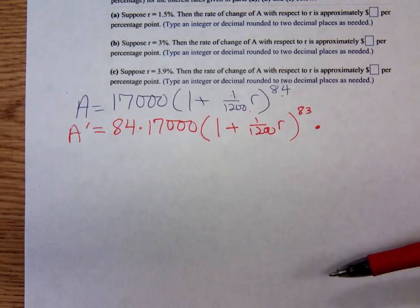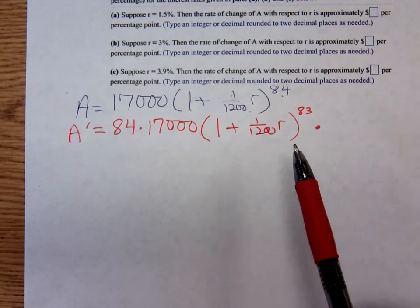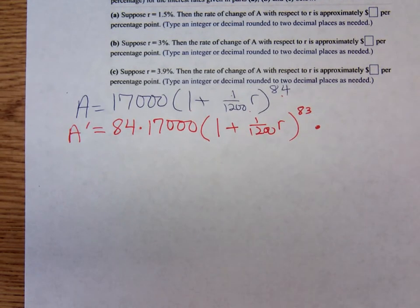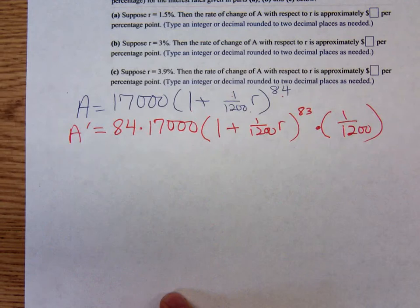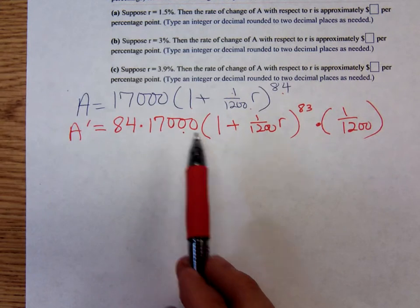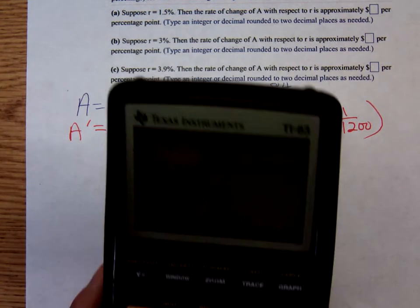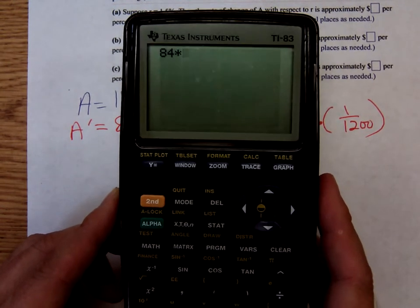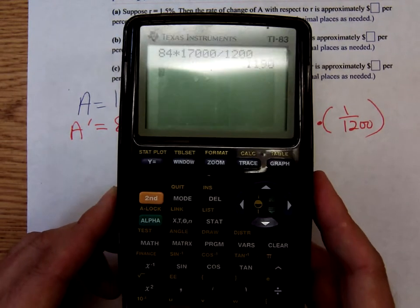We then multiply by the derivative of the inside stuff. That's why I like to write r over twelve hundred as one twelve hundred times r - it makes it more obvious what the derivative of the inside stuff is. What's the derivative of one? Zero. What's the derivative of one twelve hundred r? The derivative of a number times a variable is just that number: one twelve hundred. So digging out our calculators, I'm going to take eighty-four times seventeen thousand and then multiply by one twelve hundred.